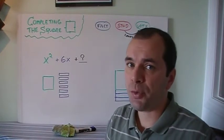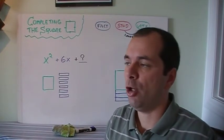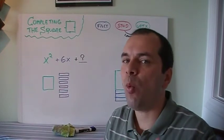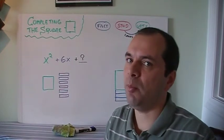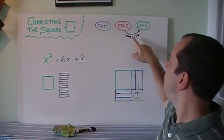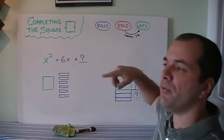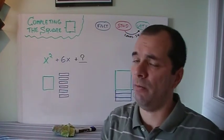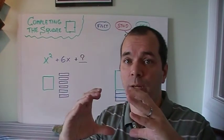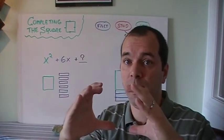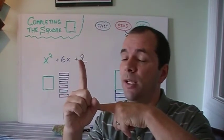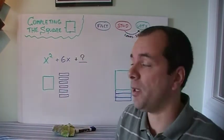You may have heard about completing the square before, or maybe this is your first time, but let's explain why we call it completing the square. It is a way of going from standard form to vertex form, because vertex form has that x minus h squared, and that's what we're trying to create as a square. x minus h squared means it's going to be x minus h and x minus h, which makes it a square.